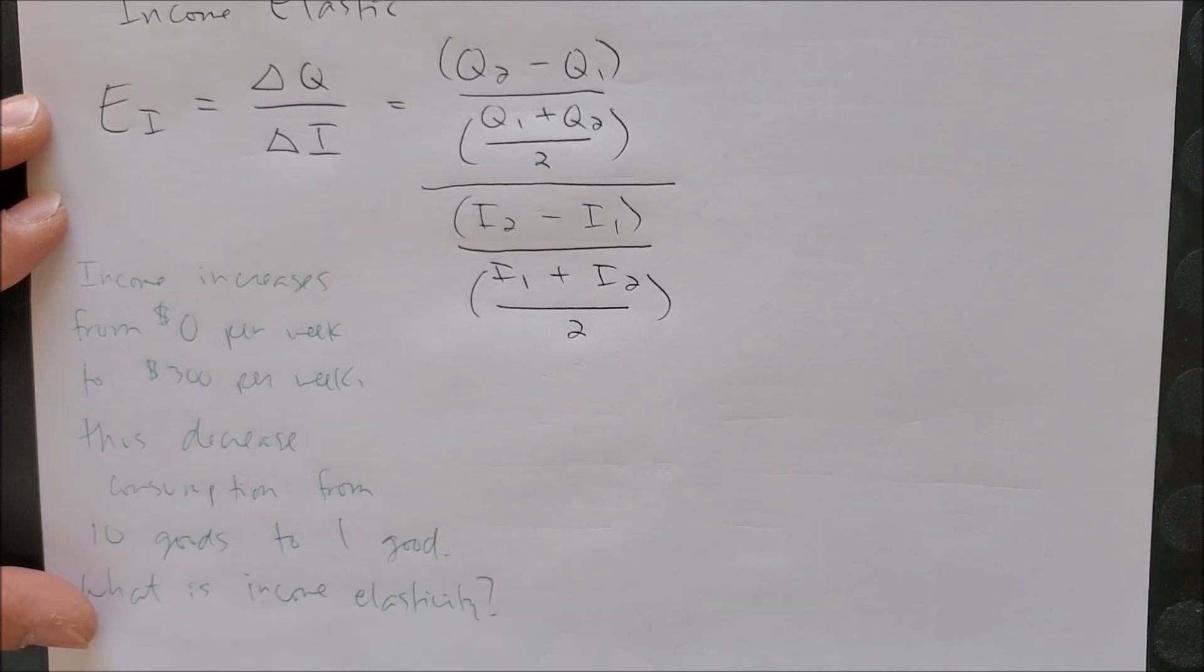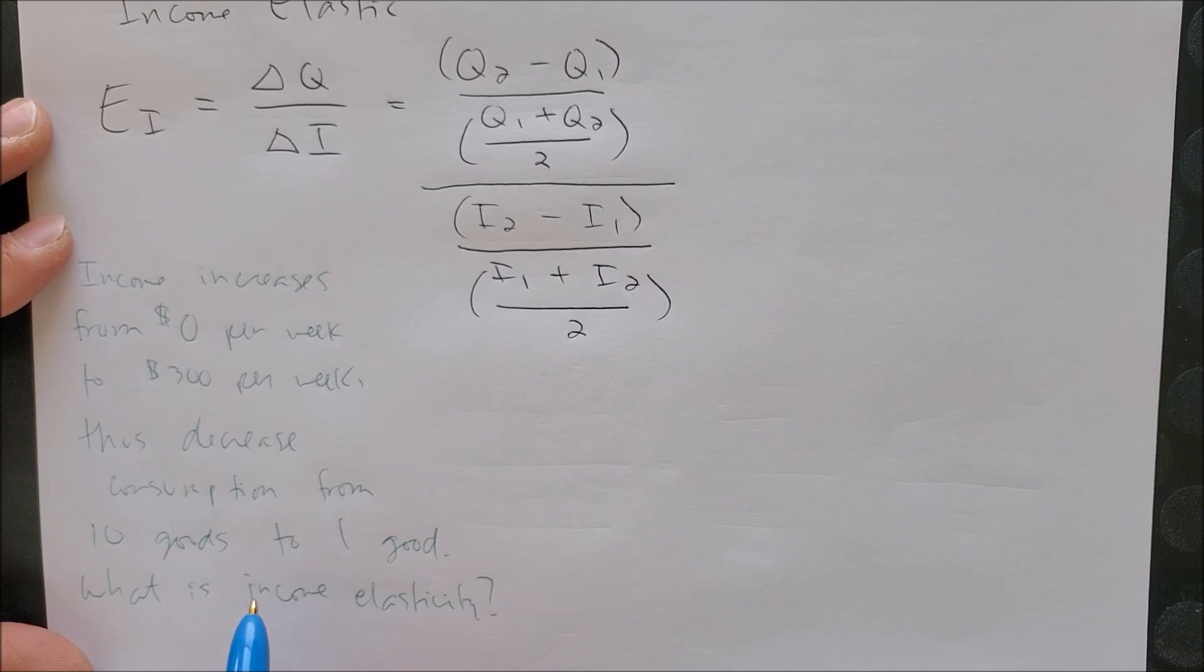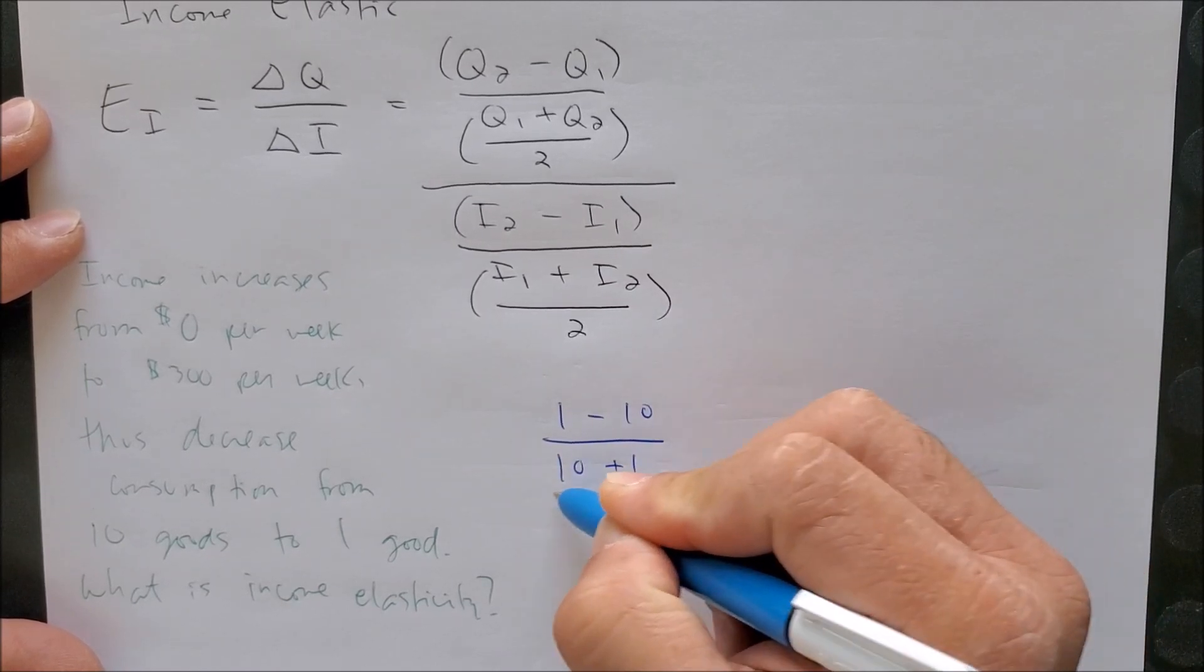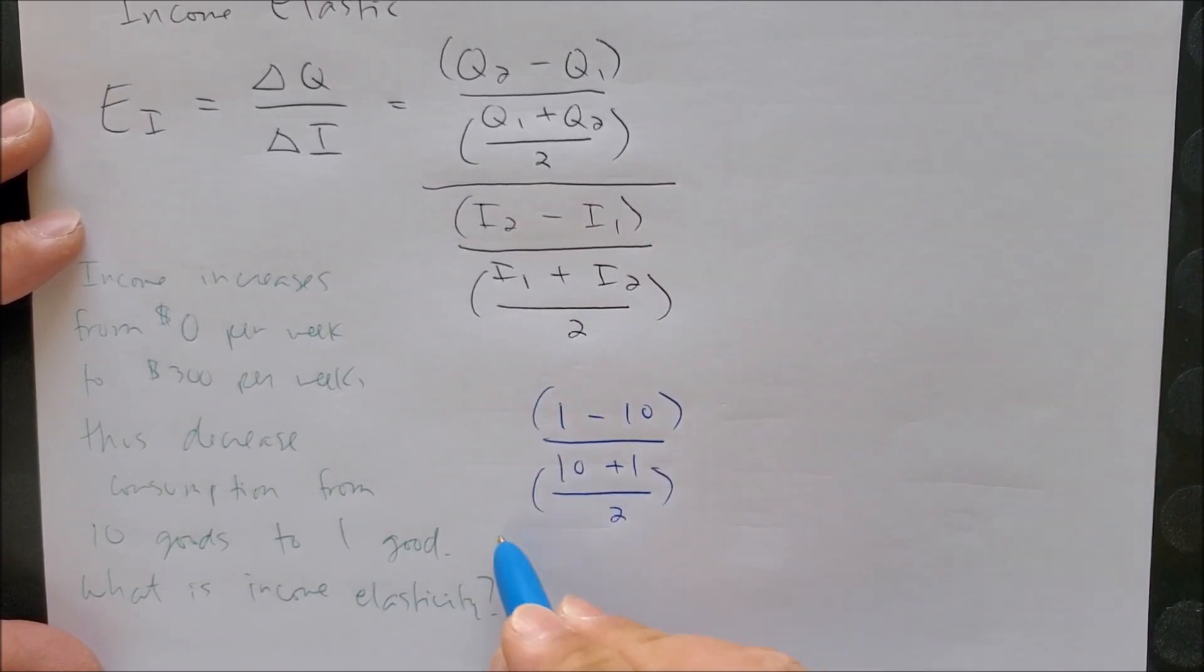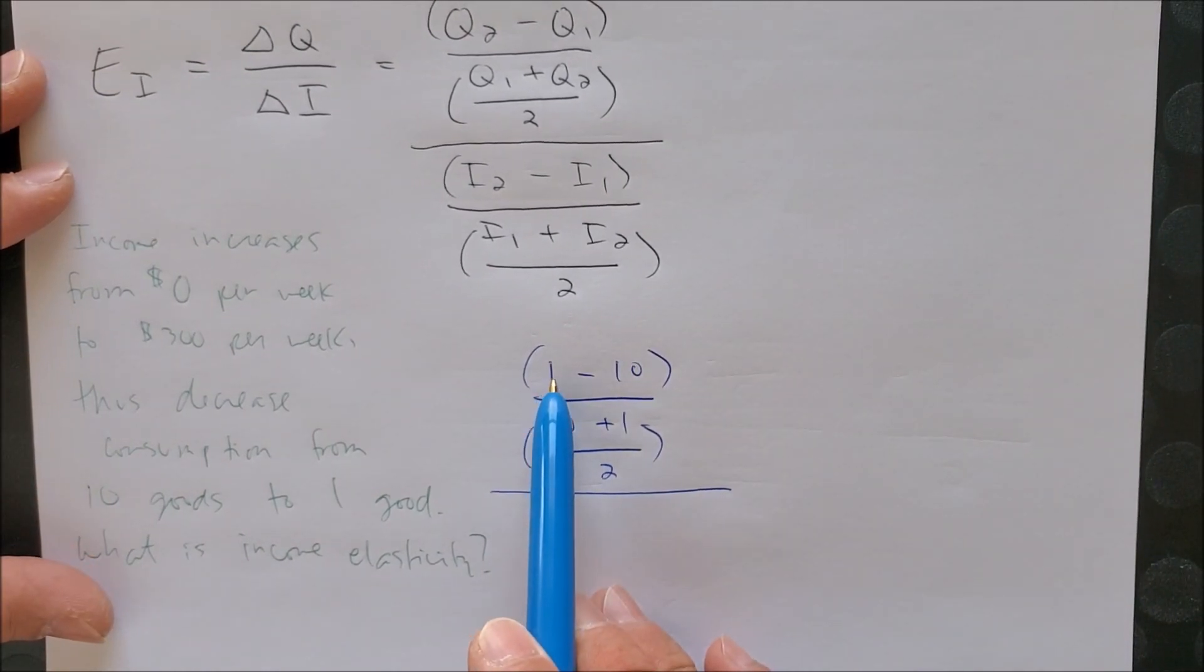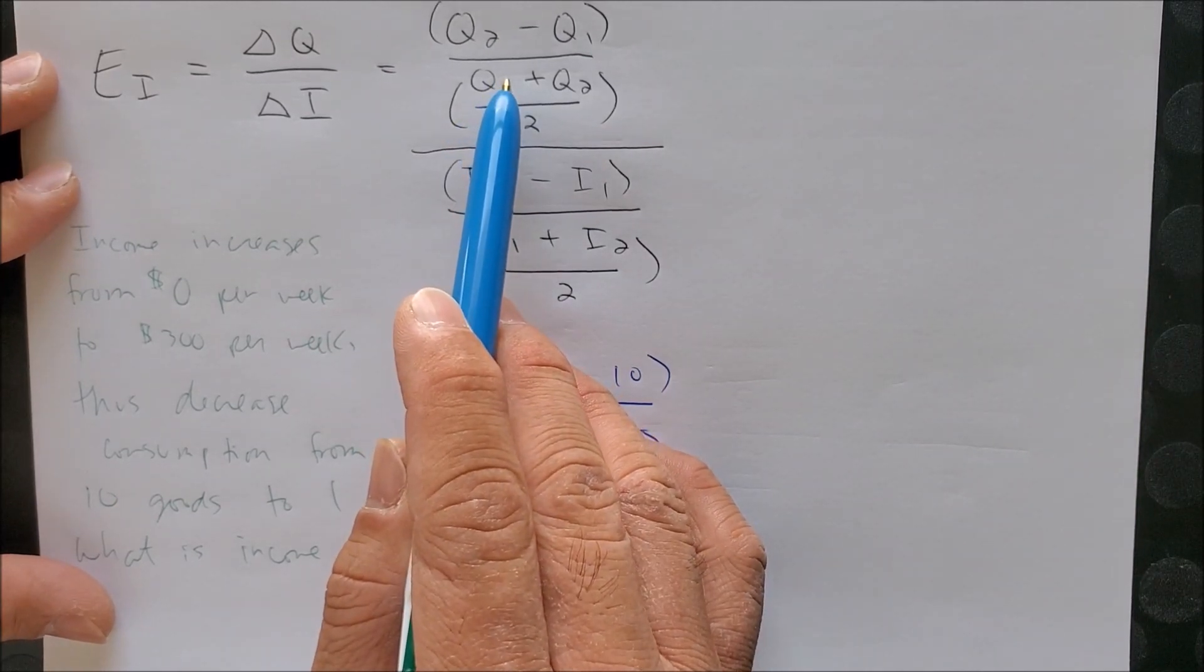Now we can go ahead and solve this problem using this equation. We can see two sets of numbers: income and quantity. Let's find the new quantity, which would be 1 for Q2 and 10 for Q1, take the average of both quantities to get the following. So now we have Q2, 1, minus Q1, 10, over Q1 plus Q2 over 2, which represents our equation called the midpoint equation.